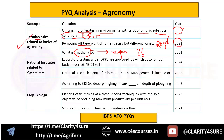There were only two questions from national institutes. In 2024, a surprise question asked: laboratory testing under DPSS is approved by which autonomous body under ISO or IEC 1711? In 2023, they asked about NRC for integrated pest management. Try to answer in the comments: where is NRC for integrated pest management located? These were among the out-of-the-box questions that appeared.